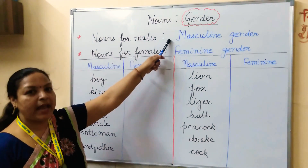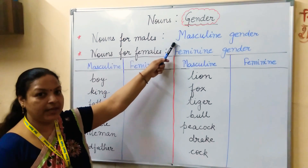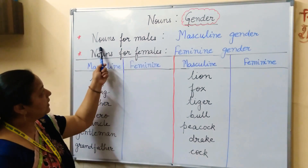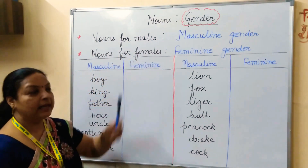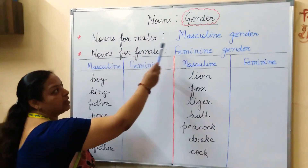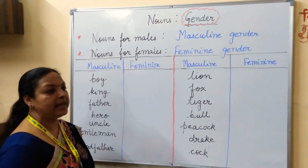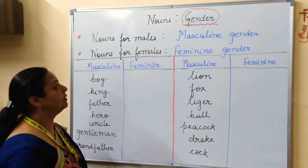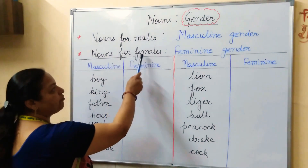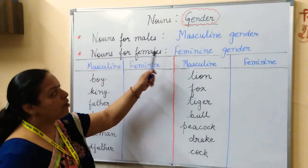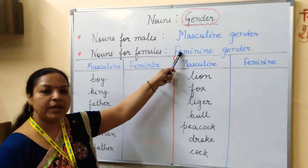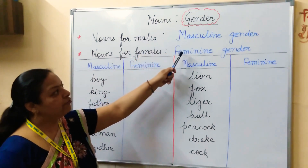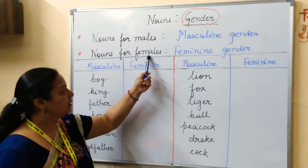We will study about two types of gender: masculine gender and feminine gender. A noun used for males is masculine gender, and nouns for females come under feminine gender. So, masculine gender is for males and feminine gender is for females.